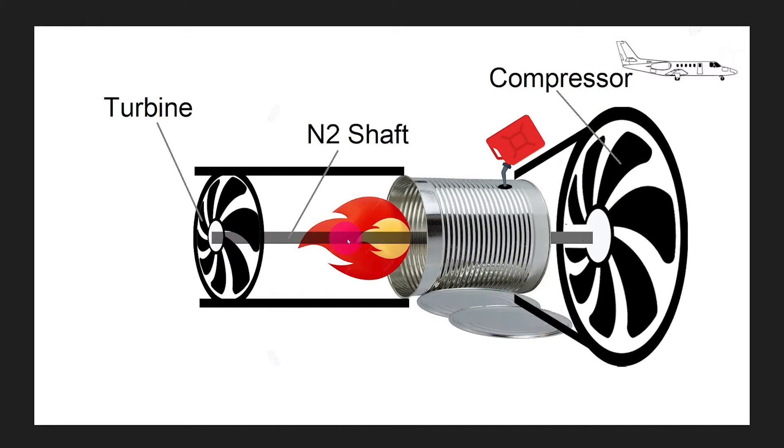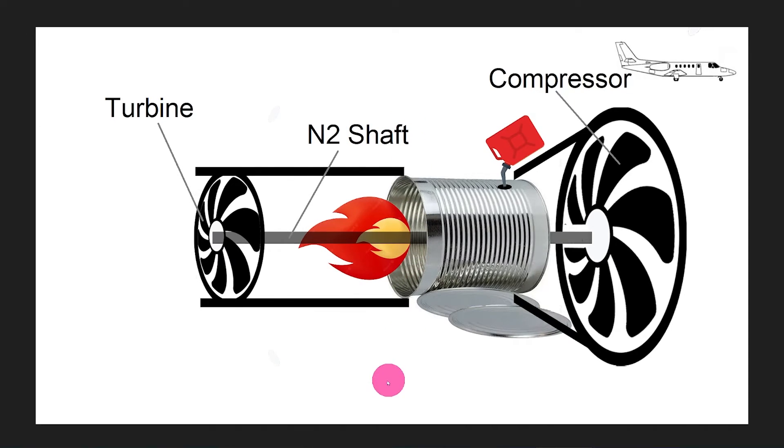Also, the rotating shaft that connects our turbine to the compressor is called the N2 shaft. Try to remember that. So our turbine's job is to capture some of the energy from the flame and send it to the front to create a compressed supply of new fresh air to enter our engine.